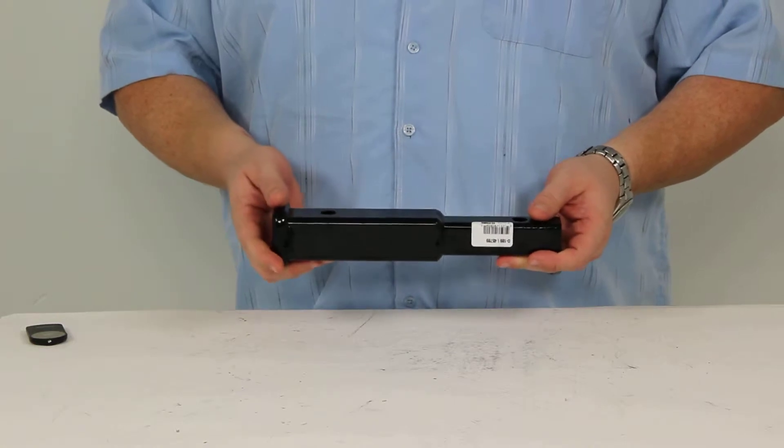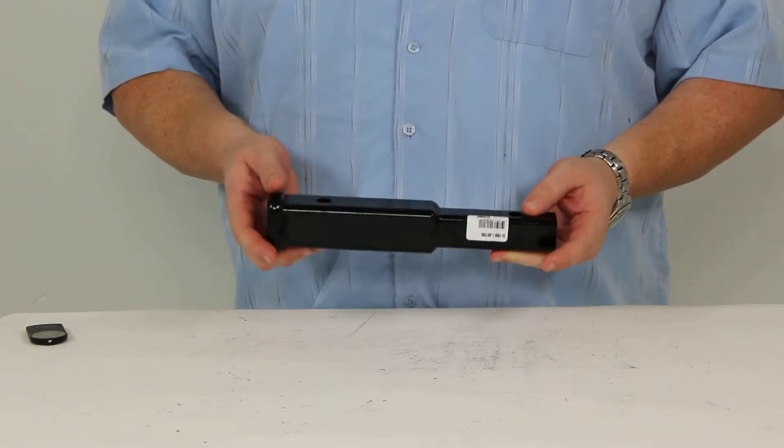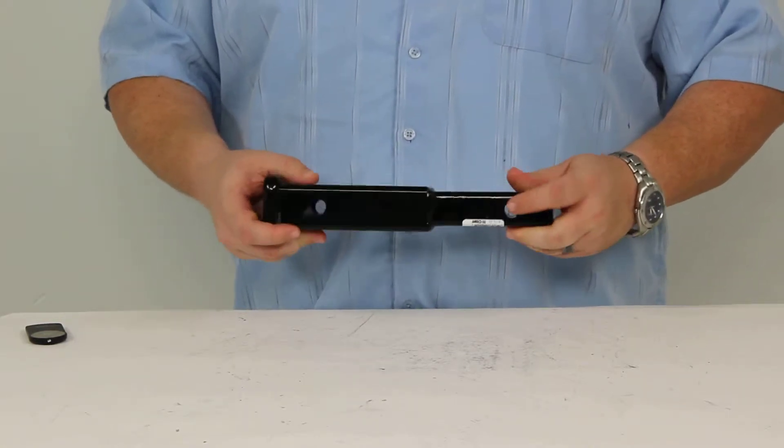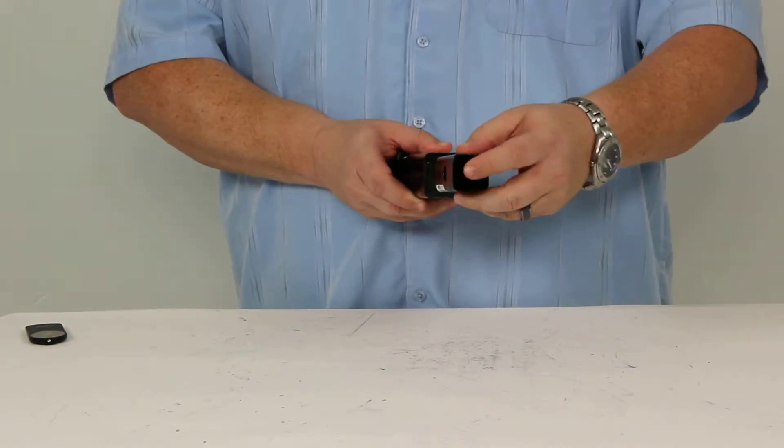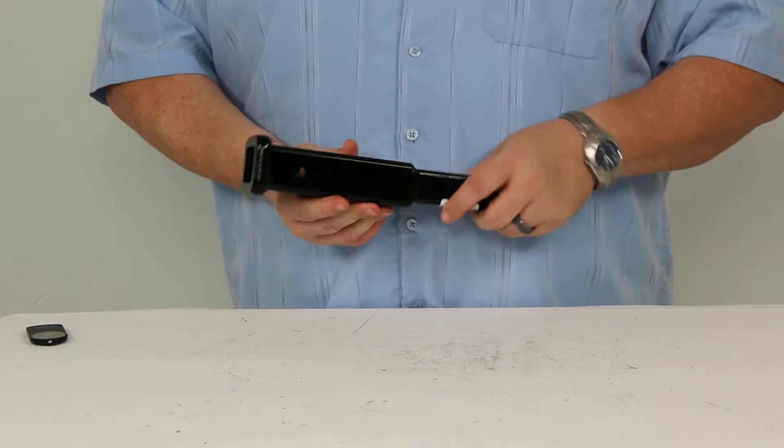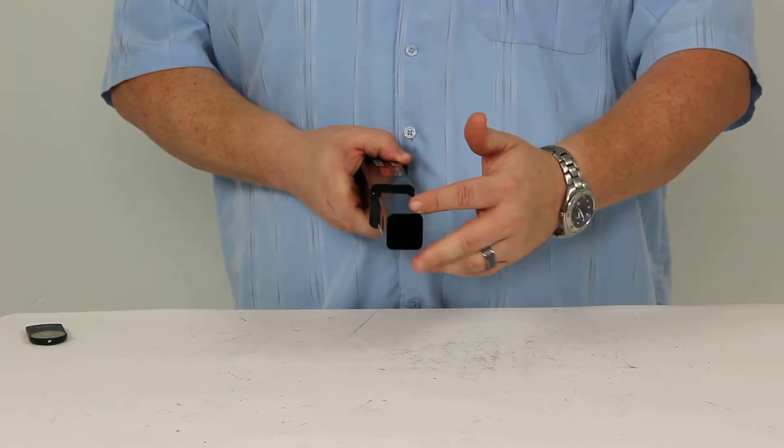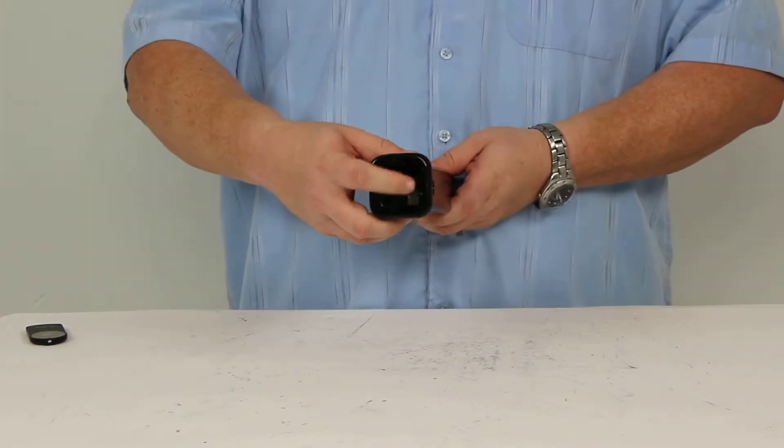It will extend your hitch 7 inches from center to center of the hitch pin holes, which are right here and right here, and this is a solid shank. It is 1 1/4 inches on this side as well as this side.